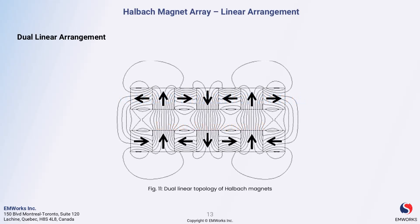Now let's discuss the halbach magnet array in a dual linear arrangement. In this configuration, we have two linear halbach arrays positioned next to each other. This setup is particularly interesting because the arrays interact with each other to create a strong magnetic field in the space between them, while generating a much weaker field at their ends.